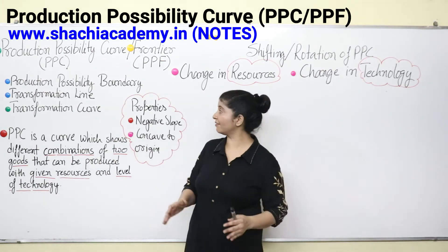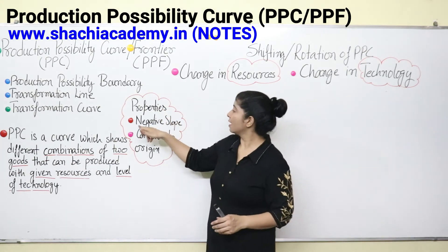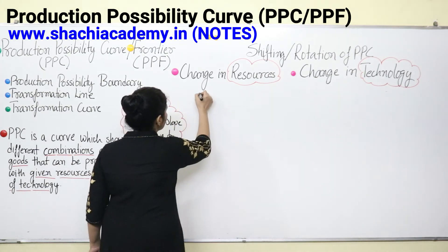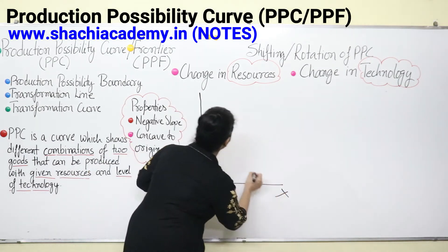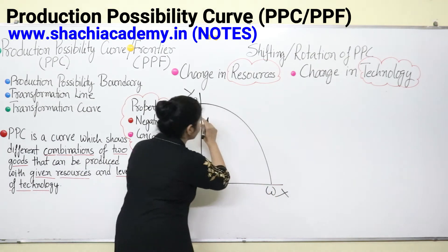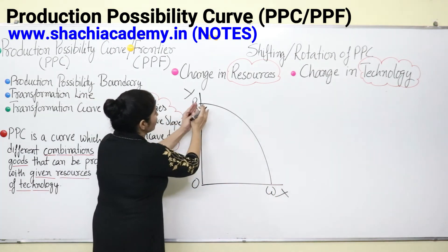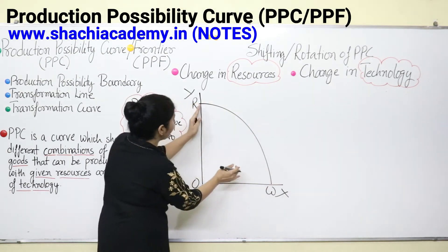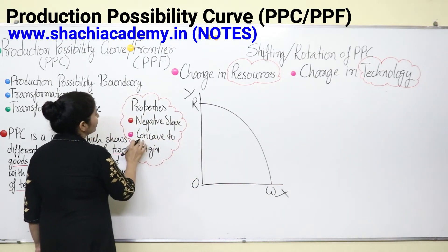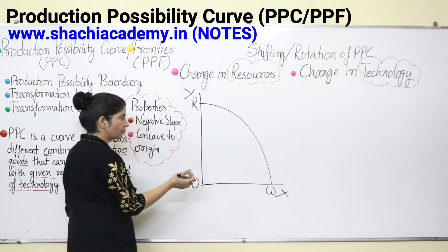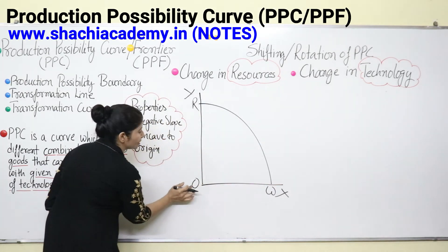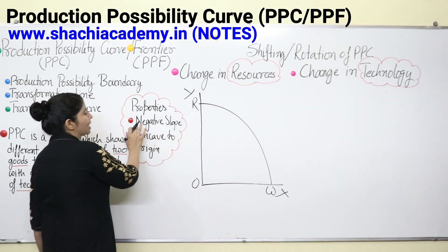After discussing the combinations, we can identify two properties of PPC. Property one is negative slope — a PPC slopes from left to right, having a negative slope. This is because to increase production of one commodity, we have to decrease production of another. Property two is concave to origin — the curve bulges outward but has a cave shape towards the origin. These are the two properties: negative slope and concave to origin.